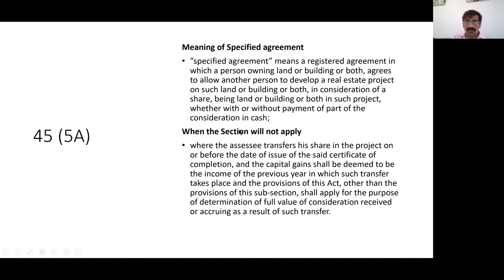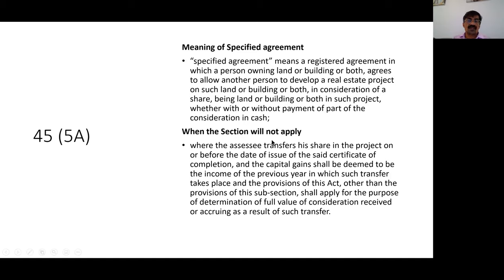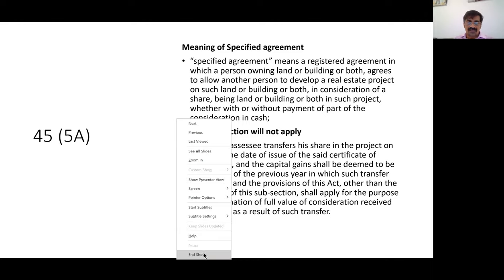An important related point: TDS provisions under section 194-IC apply to JDA. On the cash component in a JDA, 10 percent TDS will be deducted under section 194-IC. Before the JDA is completed, section 45-5A will not apply — only when the consideration is received by way of building does it apply. Section 45-5A is a recent and very important section introduced in the last 2-3 years of the syllabus.